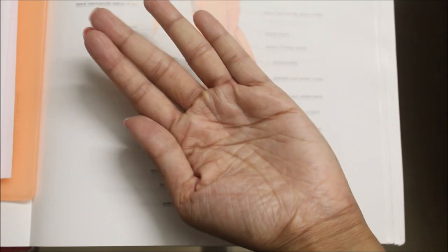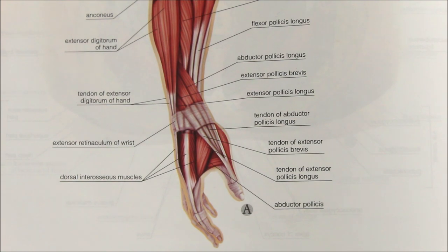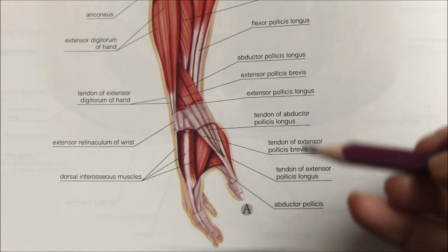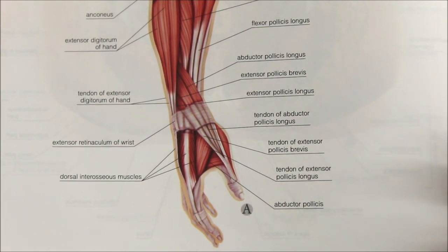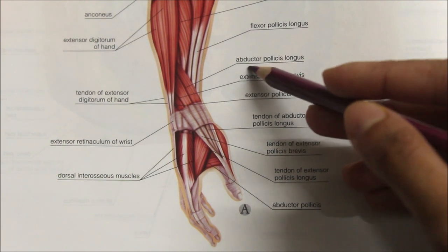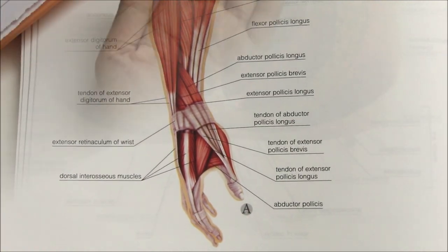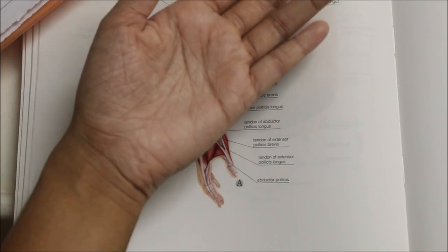Radial deviation — the abduction movement — occurs mainly at the mid carpal joint and is brought about by the flexor carpi radialis, extensor carpi radialis longus and extensor carpi radialis brevis. Ulnar deviation — the adduction movement — is brought about mainly by the flexor carpi ulnaris and the extensor carpi ulnaris muscles.